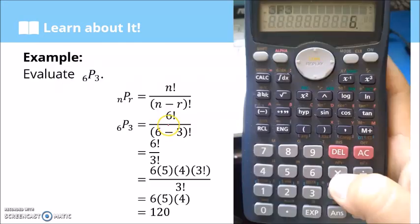Let's have an example: 6P3. We have 6 objects taken 3 at a time. So 6P3 equals 6 factorial over 6 minus 3 factorial.